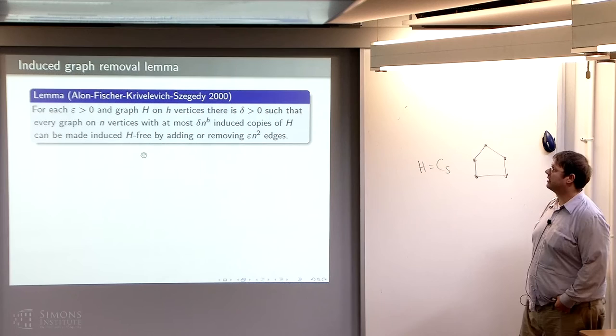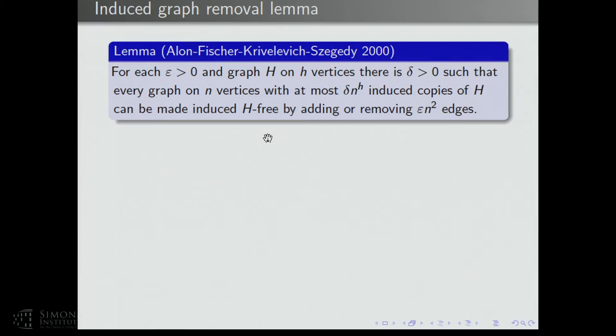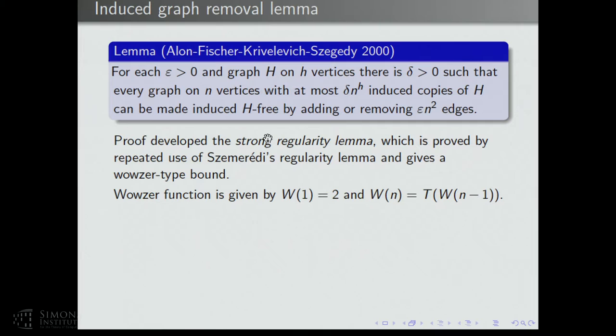The induced graph removal lemma says that given epsilon greater than 0 and a graph h on little h vertices, there's a delta greater than 0 such that if a graph has at most delta n-to-the-h induced copies of h, you can make it induced h-free by adding or removing epsilon n-squared edges. You really do need to add or remove edges — you can't just remove epsilon n-squared edges for this to be true in general.